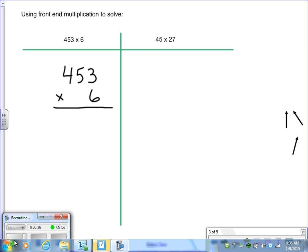And then we would take our number 6 and multiply it by 453 and do just what it describes, front-end multiplication, and we'd start from the front. However, it's important for students to remember that when they multiply 6 times 4, that 4 is not 4, it is 400. And that 5 is not 5, it is actually 50. And of course the 3 in the 1 place is 3.